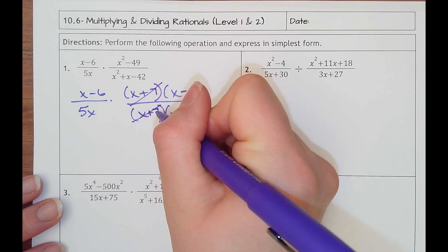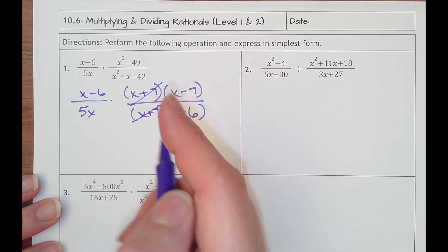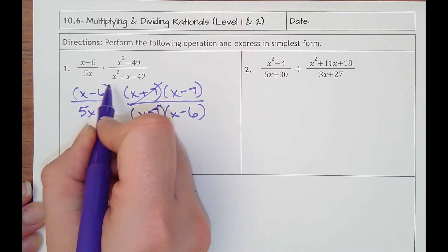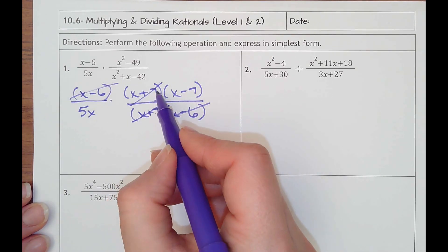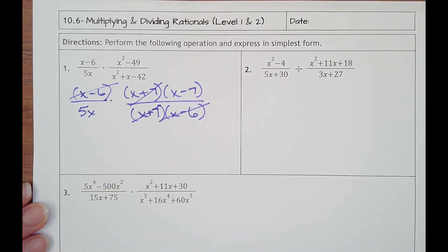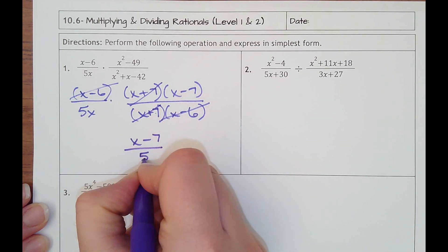And then I can divide any common factors. But I don't see anything. Oh, yes I do. x minus 6 can cancel with this x minus 6. So as long as something's on top and something's on bottom, they can divide away. So my final answer would be x minus 7 divided by 5x.